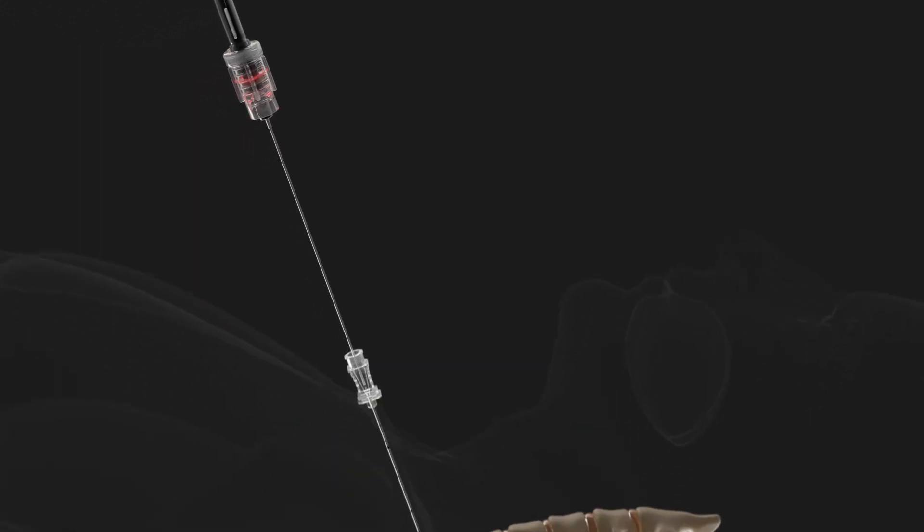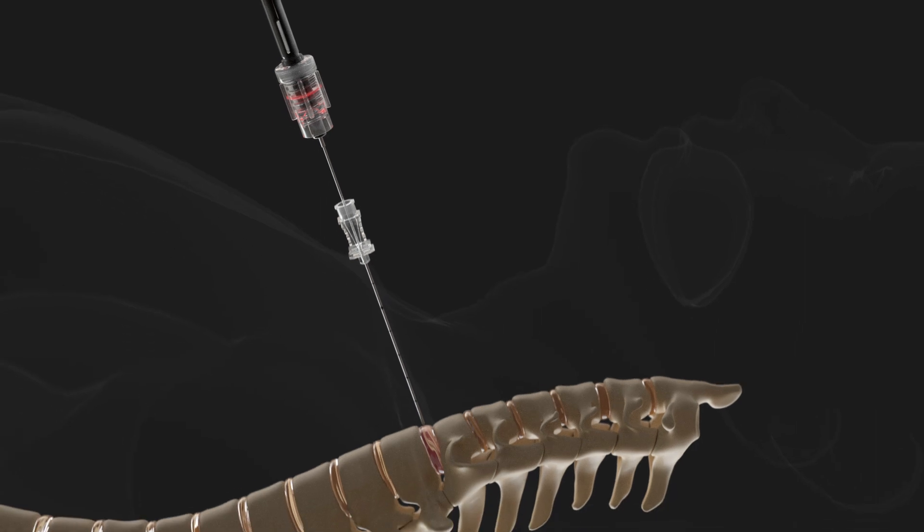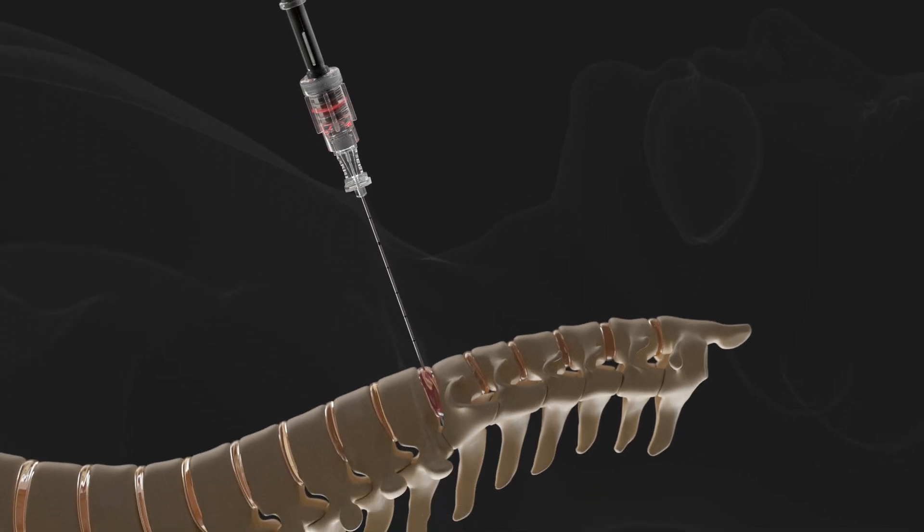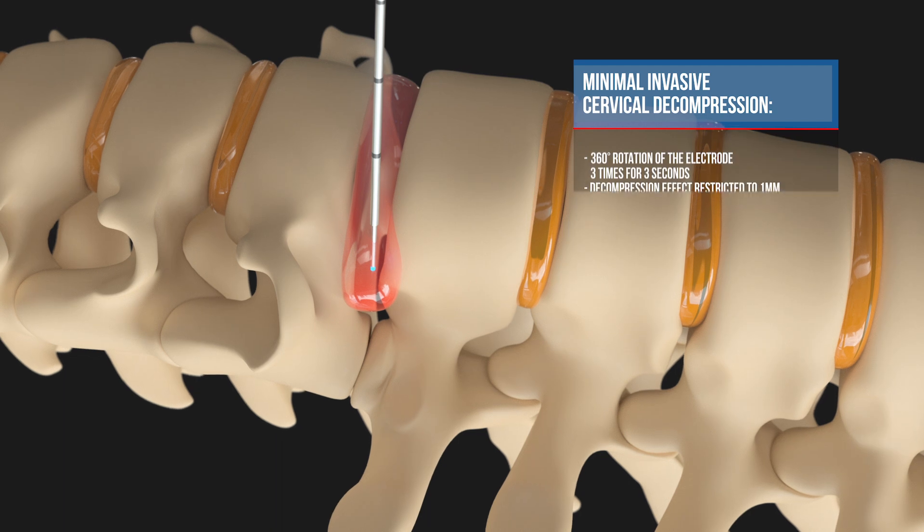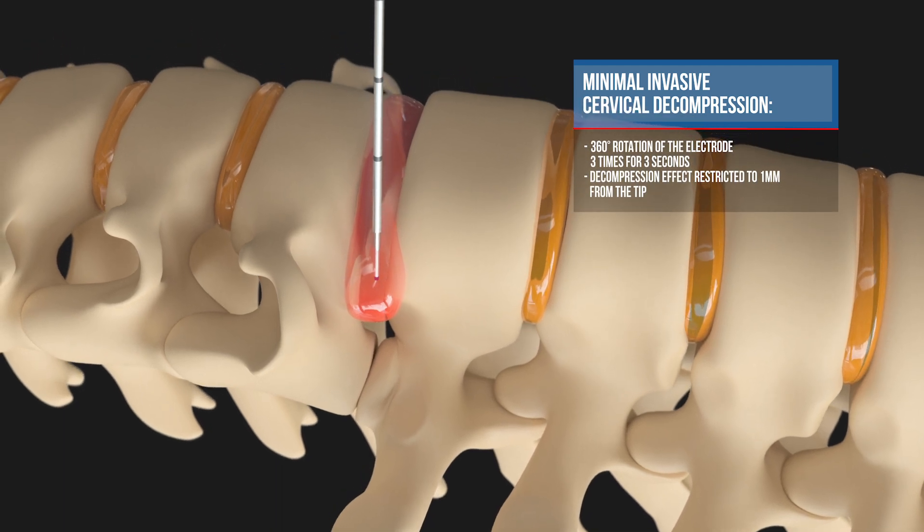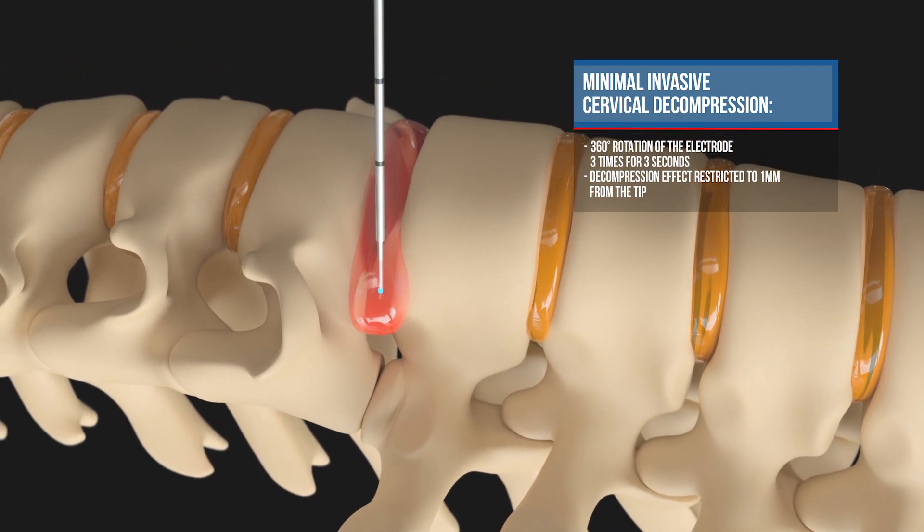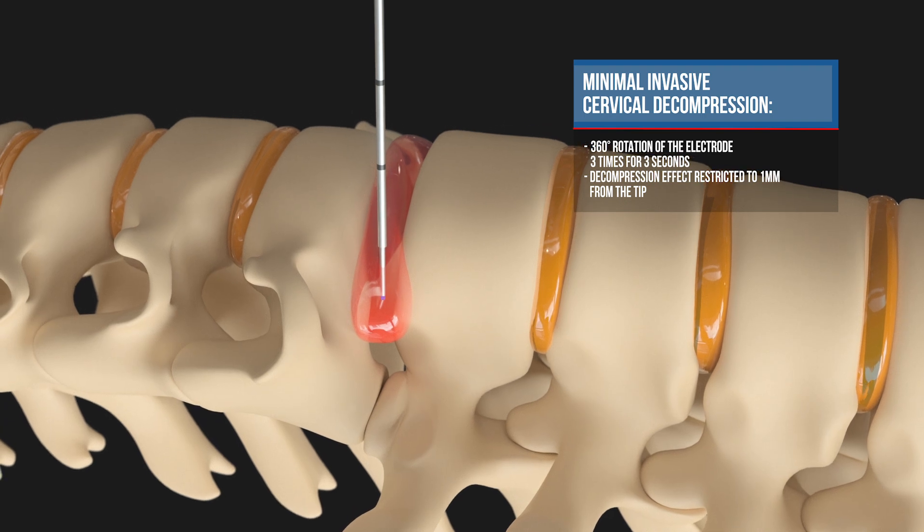Confirm proper placement using fluoroscopic guidance. Remove stylet, insert Residisc into needle and secure devices using Luer lock connectors. Connect the Residisc with the Resoblator Smart and perform decompression through quantum molecular resonance by activating the generator three times for three seconds, rotating the electrode 360 degrees.